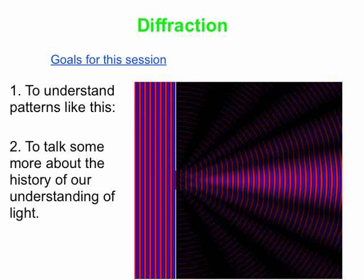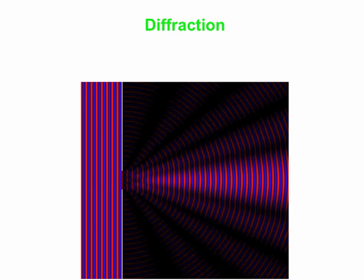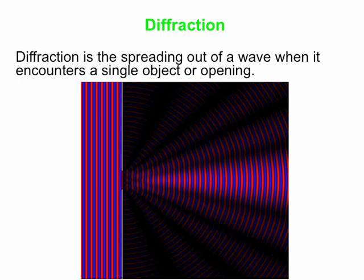And in addition to that, we'll try and talk some more about the history of our understanding of light. So how do we define diffraction? And again, diffraction is what you see in this pattern here. So diffraction is a spreading out of a wave when it encounters an object or an opening.